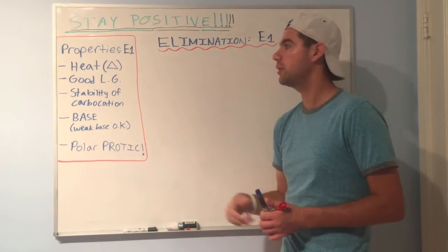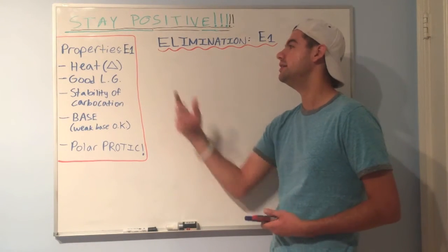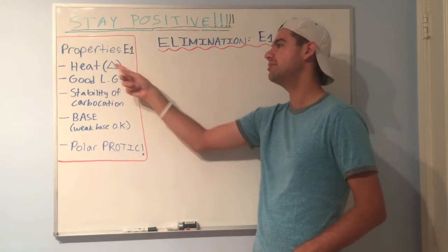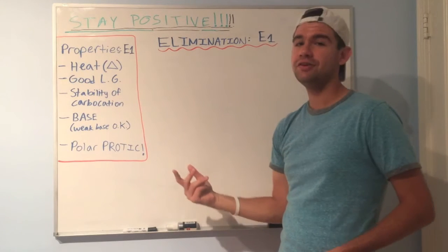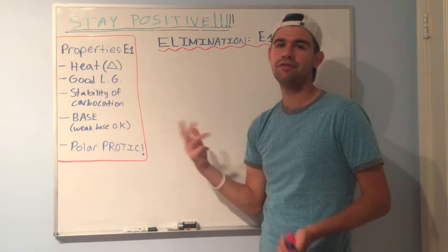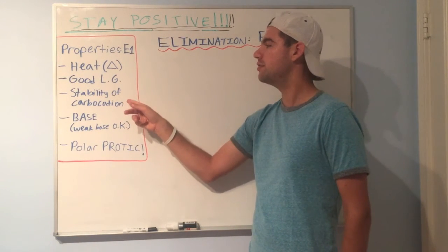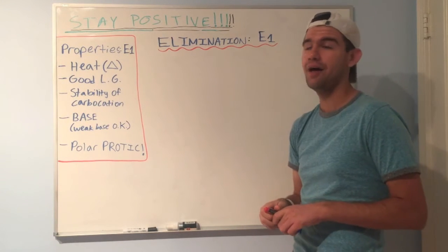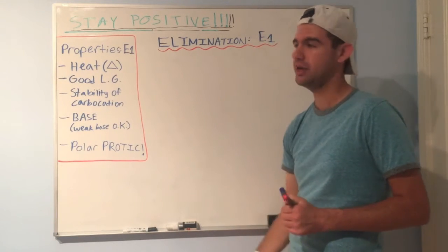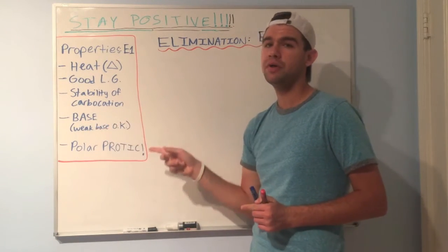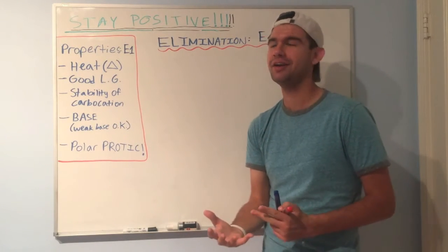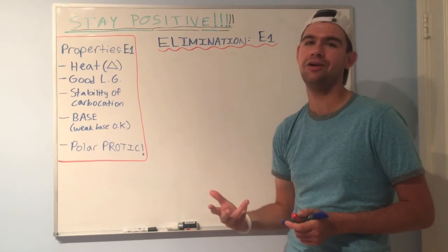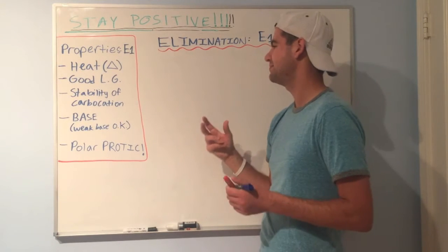Some properties of E1: we need heat for the same reason as SN1 — the rate-determining step of forming the carbocation requires a huge activation energy barrier. You need a good leaving group, obviously, for SN1, SN2, E1, and E2 — if it doesn't leave, there's no reaction. Carbocation stability is important because the more stable the carbocation, the faster the reaction. You need a base, and weak bases are okay. For E1, pretty much anything with a lone pair can act as a base — any alcohol, any amine.